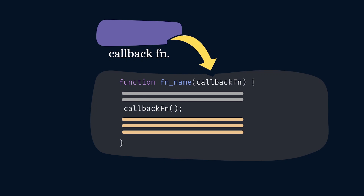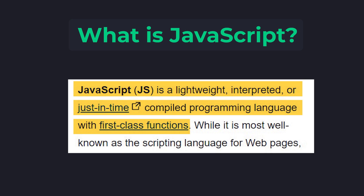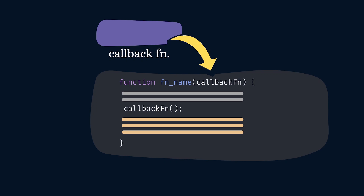Remember, while defining JavaScript, we mentioned the term 'first-class functions'. JavaScript is a lightweight, interpreted or just-in-time compiled programming language with first-class functions. If we are able to pass functions as arguments to other functions like we do with normal variables, then those types of functions are called first-class functions — in other words, callback functions. So the language JavaScript supports first-class functions. Now you understand what is meant by a callback function. Let's look at how it is helpful in our programs.